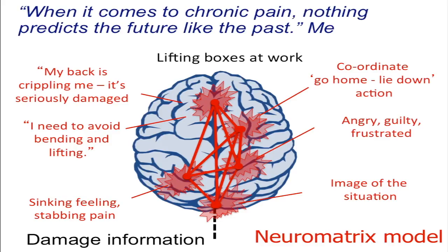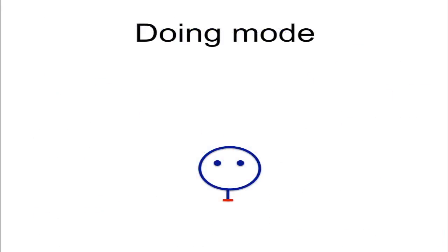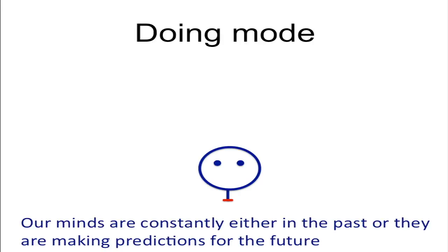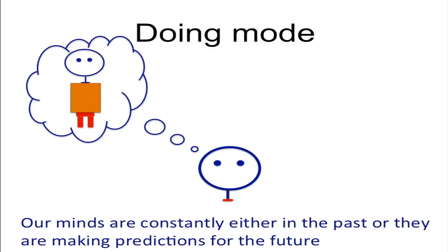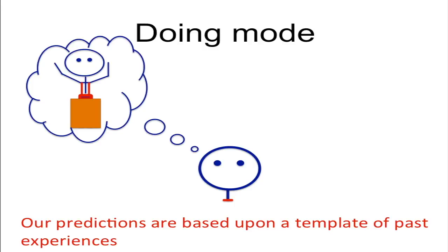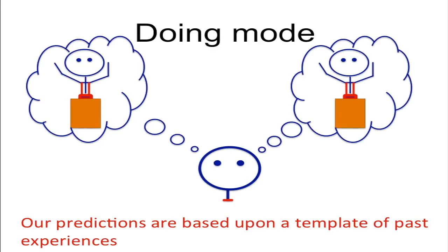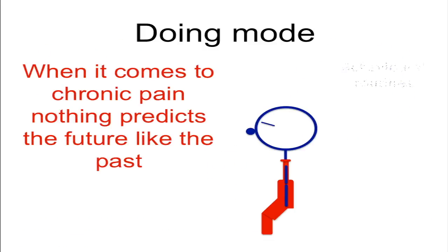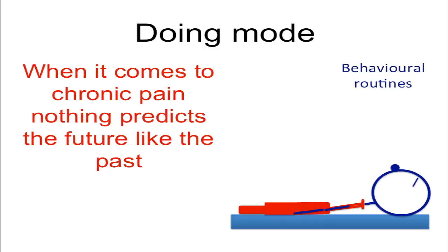When it comes to chronic pain, nothing predicts the future like the past. This brings us to a mode of mind called doing mode — a state of autopilot when our minds are either thinking back or thinking forward. We spend most of our lives in this mode of mind. A key point for pain is that our past experiences provide a template for what we expect to happen in the future. So our behavioural routines, our emotional responses and our styles of thinking all occur in doing mode.